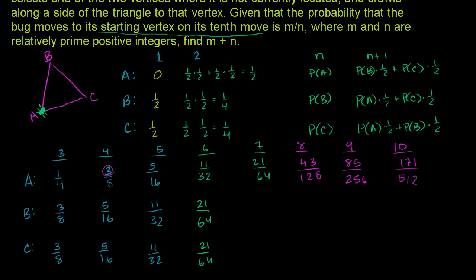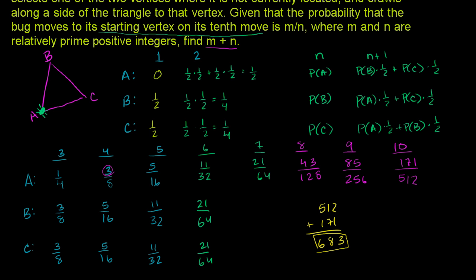So if we believe the pattern, the probability of moving to vertex a on the 10th move is 171 over 512. Therefore m plus n equals 171 plus 512. Let's add: 1 plus 7 is 8, and 5 plus 1 is 6, giving 683 as our answer.